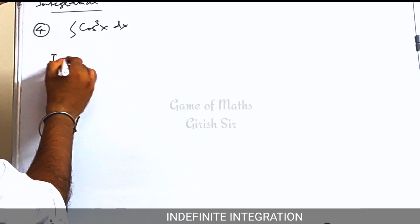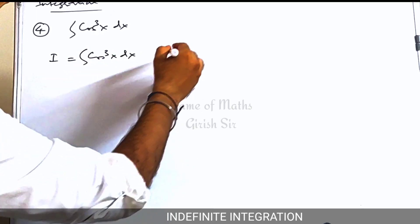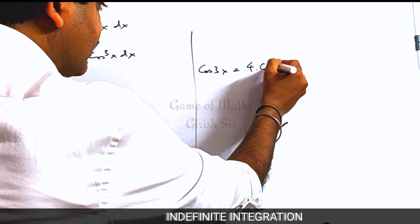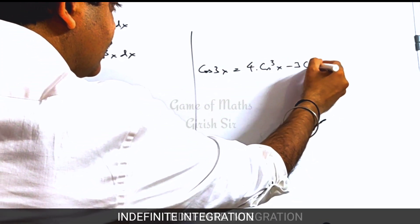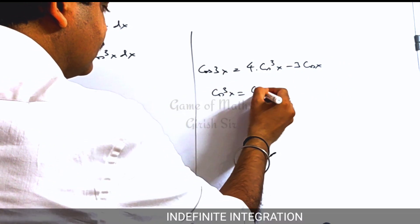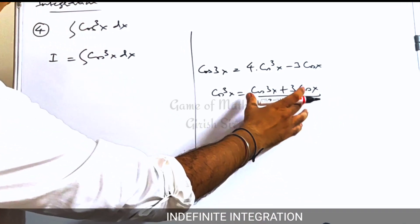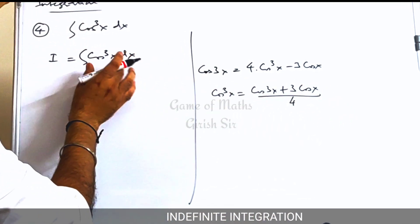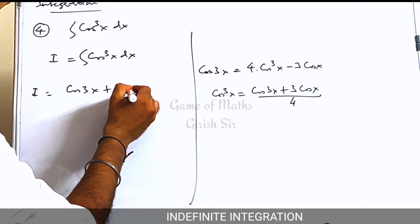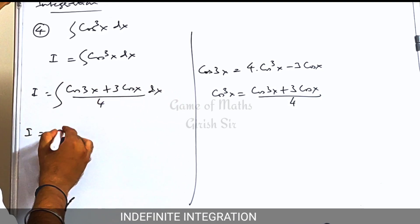Now the next question: integral of cos cubed x. Here you can use the result cos 3x = 4 cos cubed x minus 3 cos x. From here you can get the value of cos cubed x as (3 cos x plus cos 3x) divided by 4. Put this expression in place of cos cubed x. Now we can split the right-hand side into two integrals.